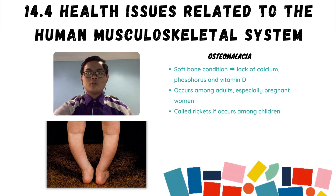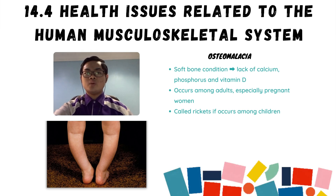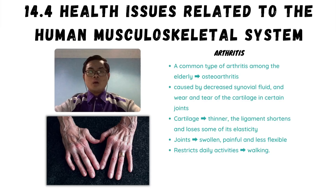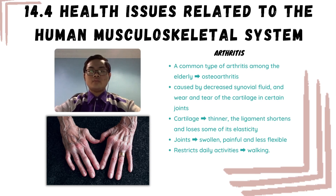The next disease is osteomalacia, a soft bone condition due to lack of calcium, phosphorus, and vitamin D. Osteomalacia occurs among adults, especially pregnant women. It is called rickets if it occurs among children. Rickets causes the softening and weakening of children's bones, resulting in bone defects. A common type of arthritis among the elderly is osteoarthritis.